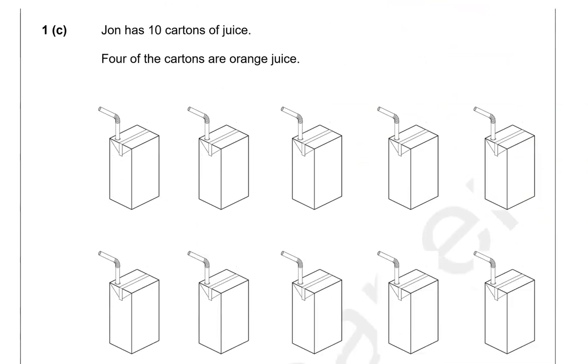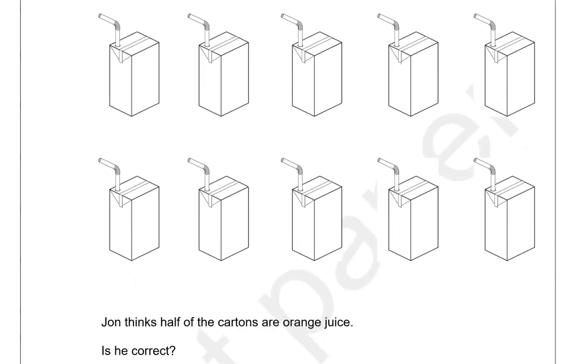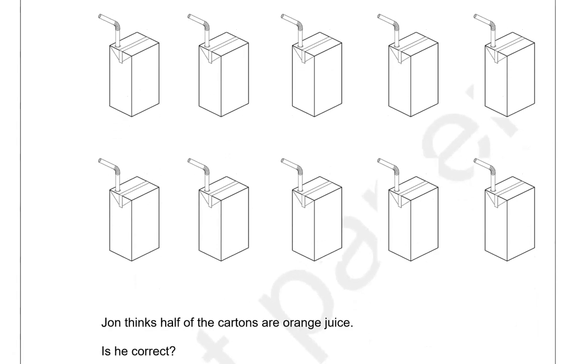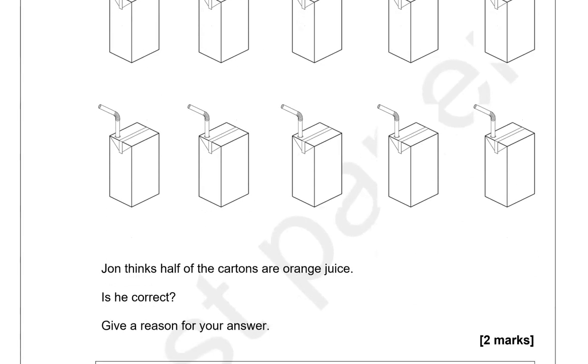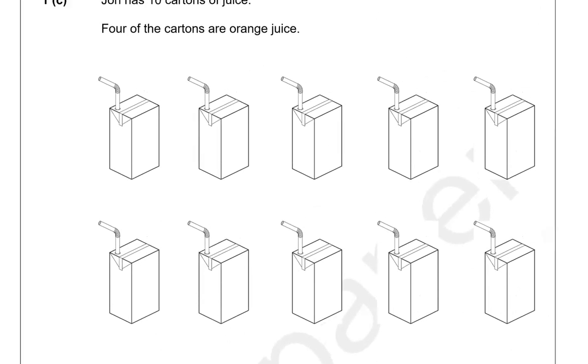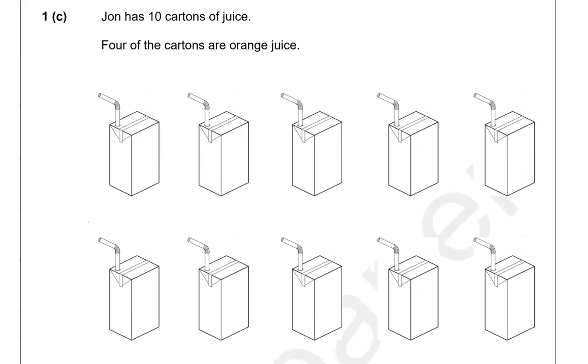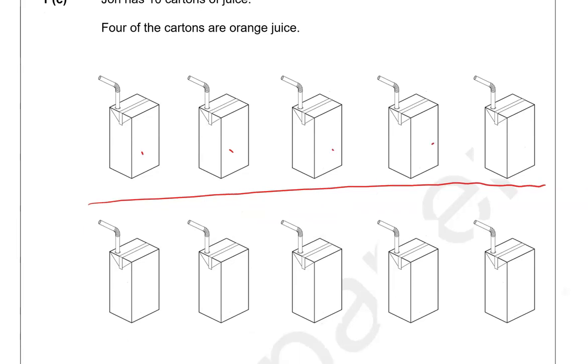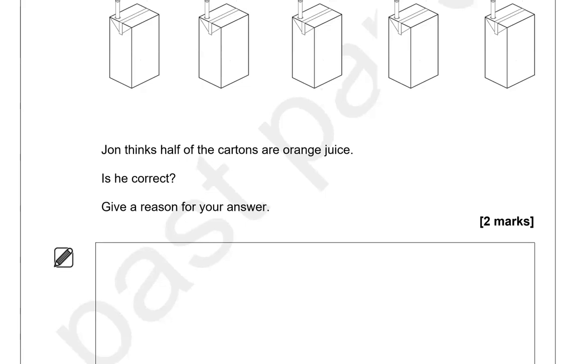John has ten cartons of juice. Four of the cartons are orange juice. John thinks half of the cartons are orange juice. Is he correct? Give a reason for your answer. So half of the cartons, that would be 1, 2, 3, 4, 5, not four. So is it correct? We're going to say no. Half of ten is five.